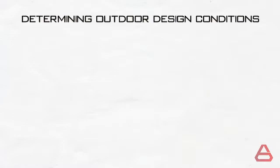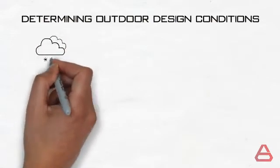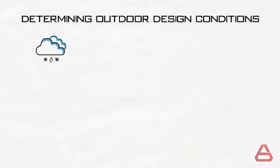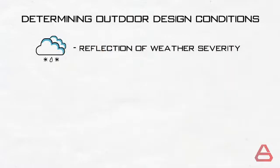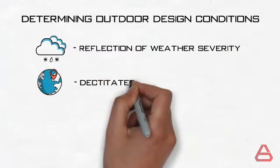So how do we determine the outdoor conditions? Outdoor design conditions are actually a reflection of the severity of the climate the studied building experiences. Therefore building location is the primary factor in determining these conditions.